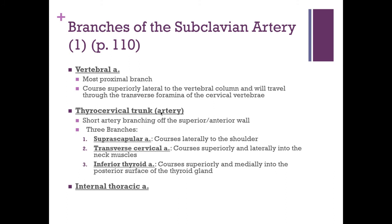We also have a structure called the thyrocervical trunk. This is a short branch with three other branches: the first is the suprascapular artery, the middle branch is the transverse cervical artery, and then we have the inferior thyroid artery.